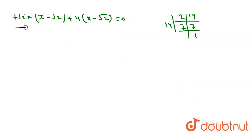In the next step we get (x - √2)(7√2x + 4) = 0. From here we get x = √2 and x = -4/(7√2).